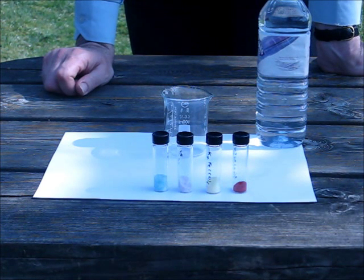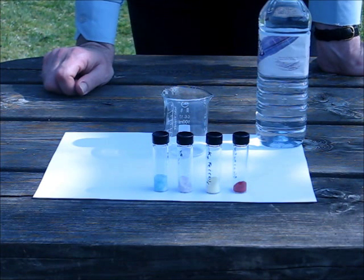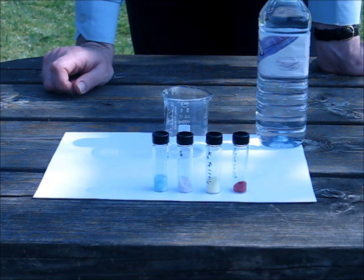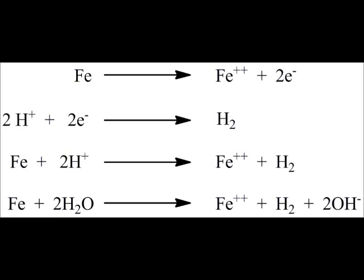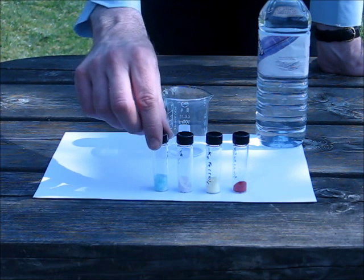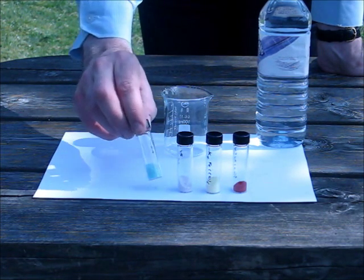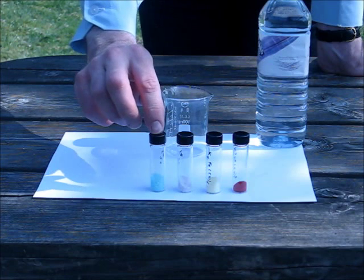When you dissolve iron in acid, the iron is oxidized. Usually the water in the acid is reduced, so forming hydrogen. Now, if the iron is oxidized to a plus two oxidation state, then you have this green oxidation state here, that's iron two.